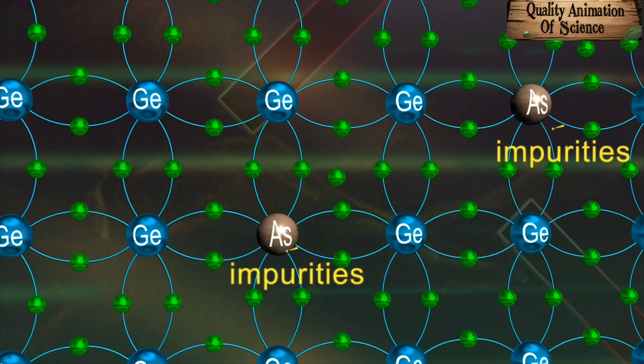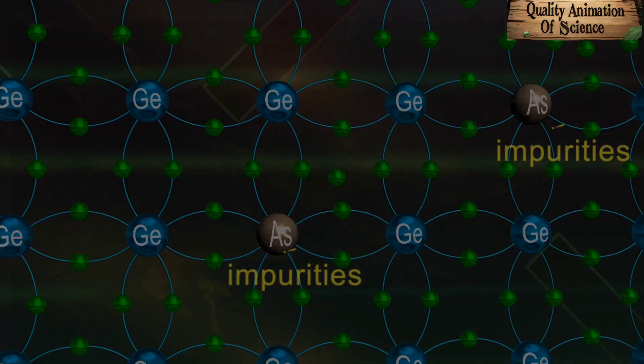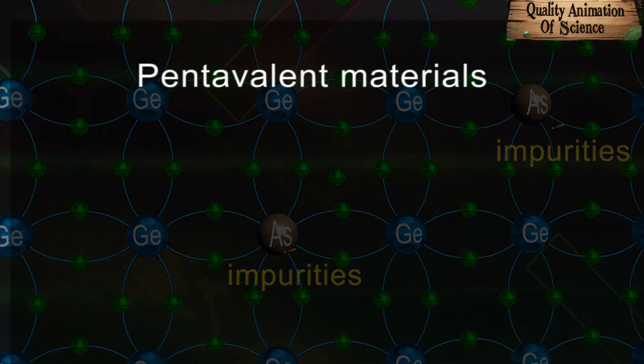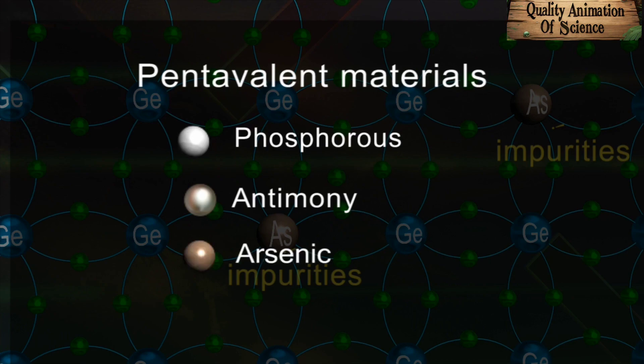Two atoms of germanium are shown to be replaced by arsenic atoms. Thus, if one adds pentavalent materials like phosphorus, antimony and arsenic to the tetravalent germanium.